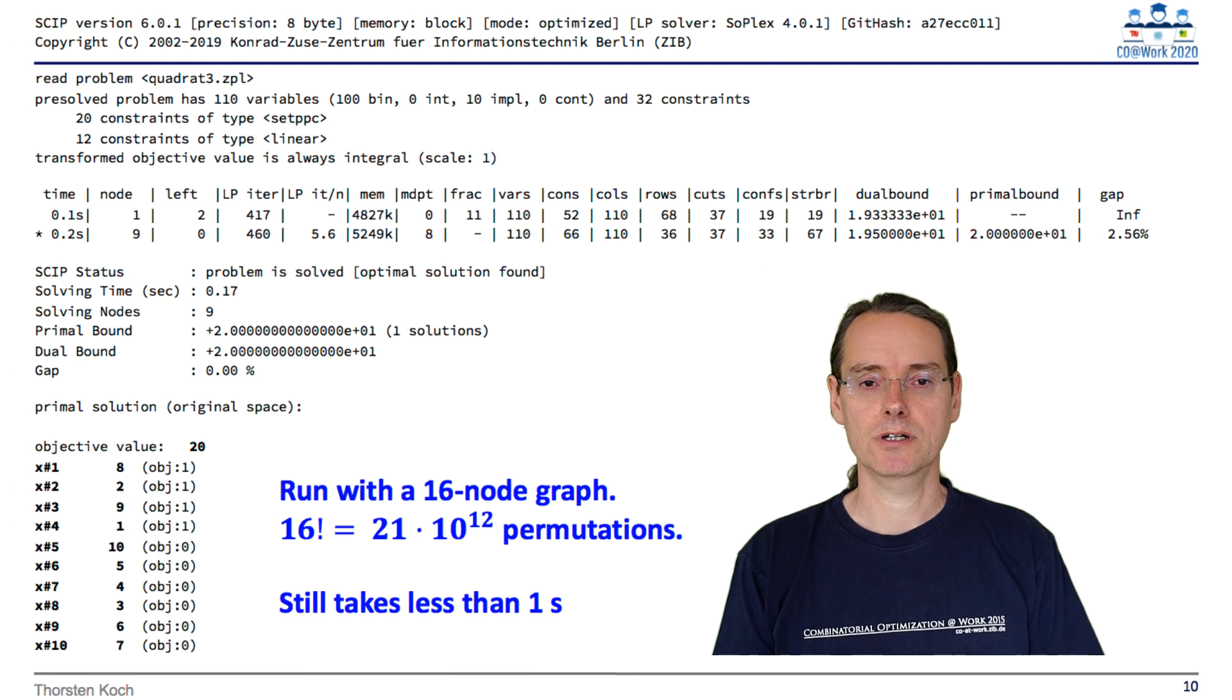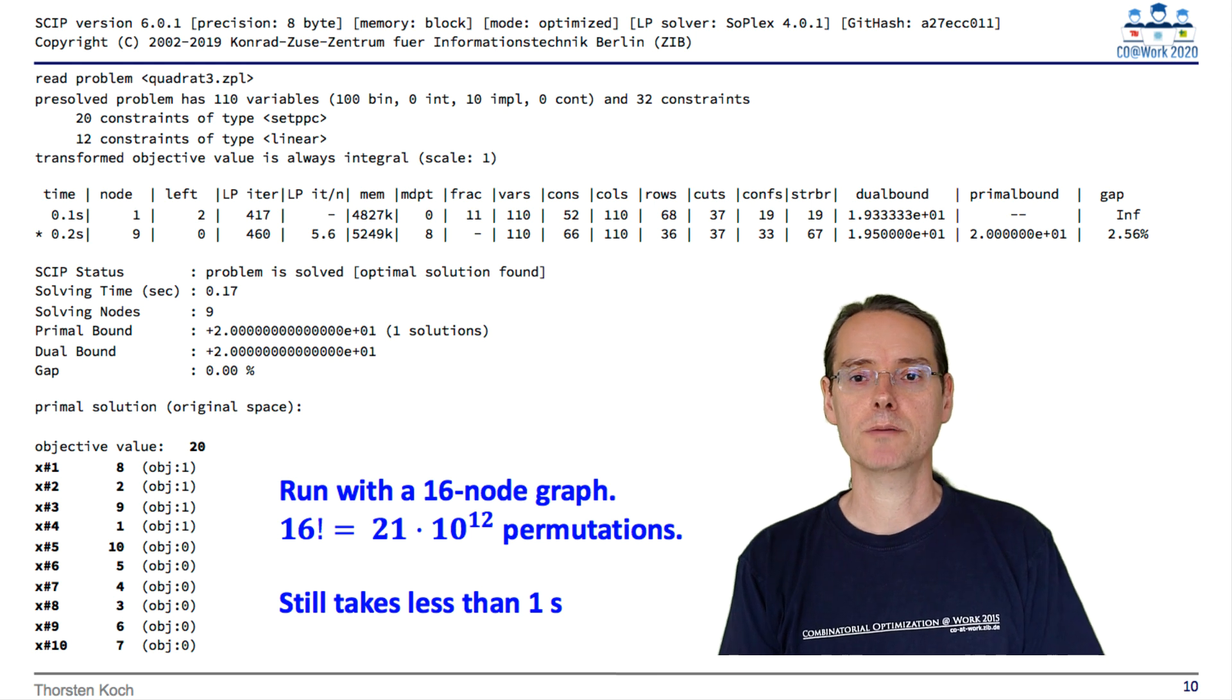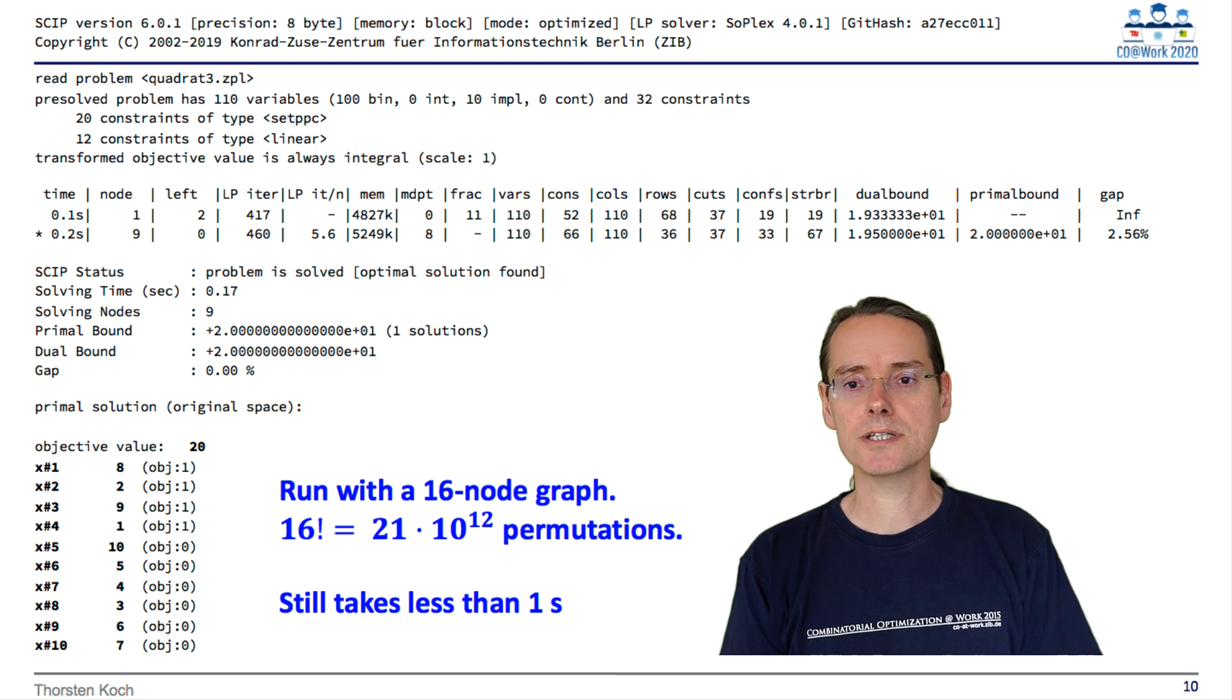Now we feed this to an integer programming solver. In this case SCIP, which is the solver we develop at ZIB. As you can see, it finds a solution very fast. And this is indeed a globally optimal solution, and we get 20.